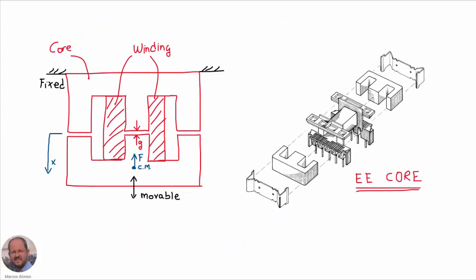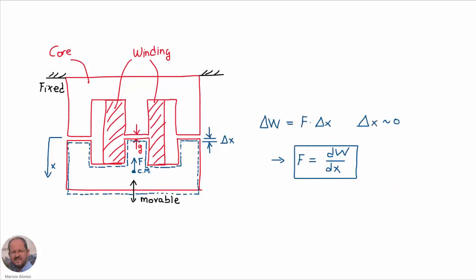We are going to see how to calculate forces in magnetic circuits, taking as an example an inductor with two E-halves and a winding. We have a current circulating in the winding which generates a magnetic flux inside the structure. If we try to separate both halves, we have to exert a force on them. What we are going to calculate today is the value of this force between the two halves of the inductor.